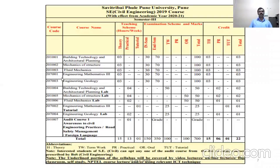University structure as per Pune University: the first semester includes Building Technology and Architecture Planning, Mechanics of Structure, Fluid Mechanics, Engineering Mathematics 3, and Engineering Geology — a total of 700 marks for these 5 subjects, plus term work, practical, and tutorials. Credits: theory 15 credits, practical 6 credits, tutorial 1 credit, totaling 22 credits.